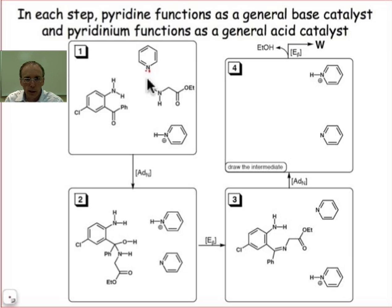So we're going to start with the general base, we're going to end with the general acid. That's always the way the electrons will flow.